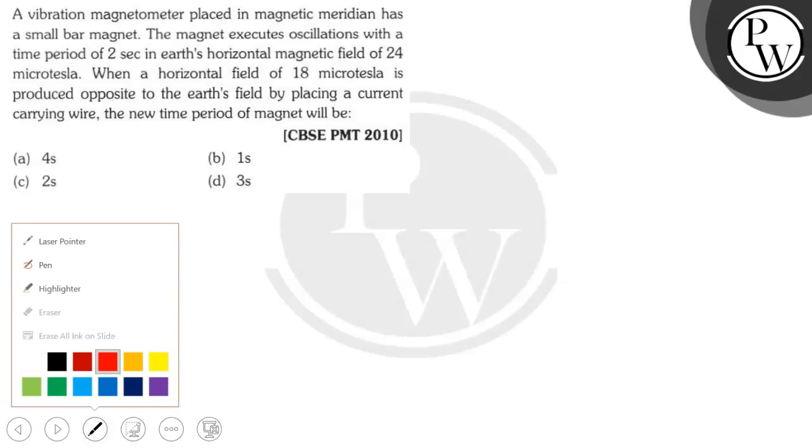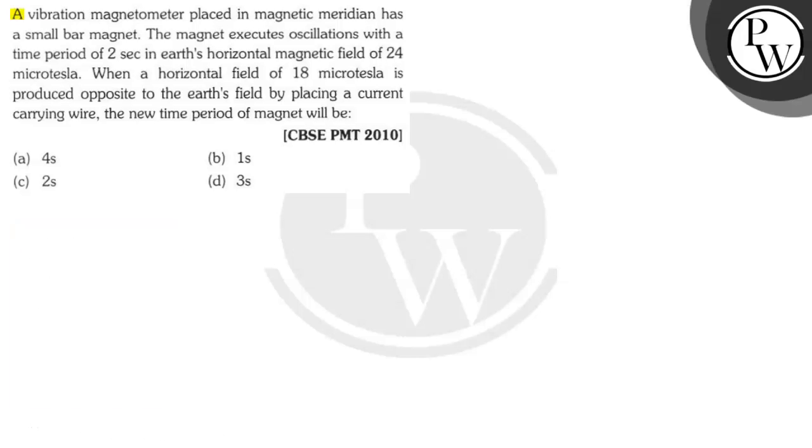Hello virtual, let's see the question. The question says that a vibration magnetometer placed in a magnetic meridian has a small bar magnet. The magnet executes oscillations with a time period of 2 seconds in earth's horizontal magnetic field of 24 microtesla.